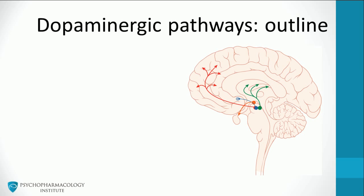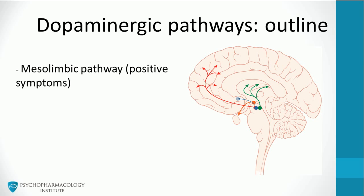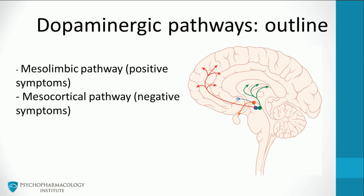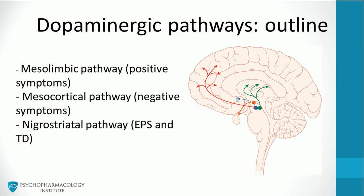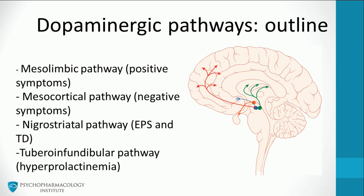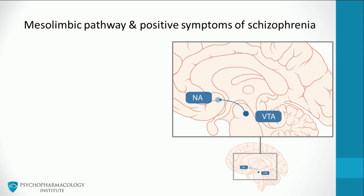By blocking these pathways, antipsychotics can produce both therapeutic and adverse effects. The four pathways relevant to the pharmacology of antipsychotics in the treatment of schizophrenia are: the mesolimbic pathway, related to positive symptoms; the mesocortical pathway, related to negative symptoms; the nigrostriatal pathway, related to extrapyramidal symptoms and tardive dyskinesia; and the tuberoinfundibular pathway, related to hyperprolactinemia.